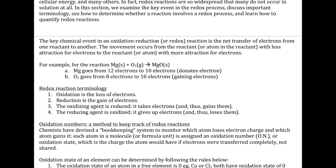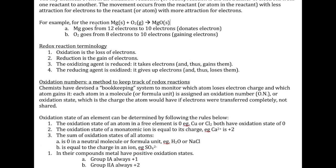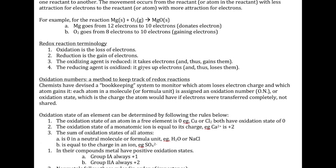The oxidizing agent is the species — the reactant — that is reduced. So in this case, because oxygen is reduced, oxygen is our oxidizing agent. Vice versa, the reducing agent is oxidized. Since our magnesium is oxidized, that means magnesium is the reducing agent.